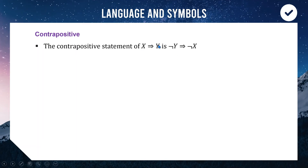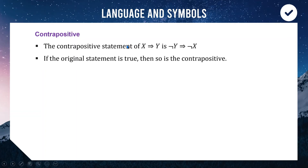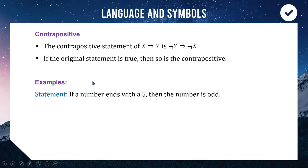The next term is the contrapositive statement. If we have a statement X implies Y, the contrapositive is: negation of Y implies negation of X. We negate both X and Y and then reverse the direction of the implication. The key reason we care about this is that if a statement is true, its contrapositive will also be true — and if false, the contrapositive is also false. For example, 'if a number ends in 5, then the number is odd.' The contrapositive negates both halves and reverses direction: 'if the number is even, then the number does not end in 5.'